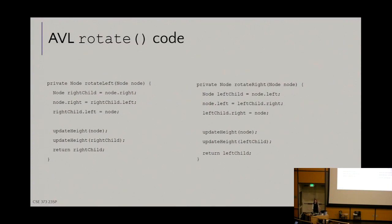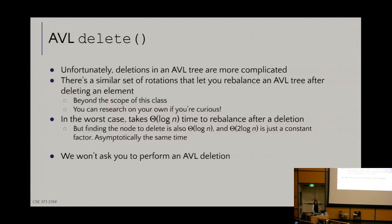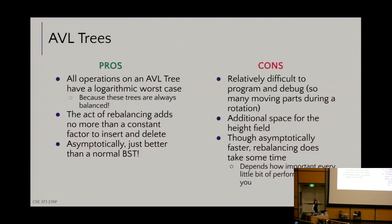So can we do better? Also — delete: I literally didn't even put the delete code on here because I thought it would terrify all of you. It's really gross. Pros: all operations have O(log n) worst case; reactive rebalancing is asymptotically constant; it's just better than a normal BST. But it is difficult to program and debug, and we need extra space for the height field.